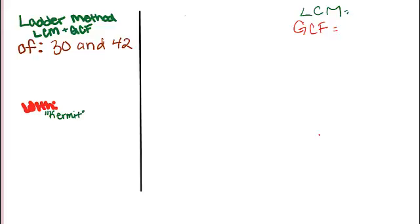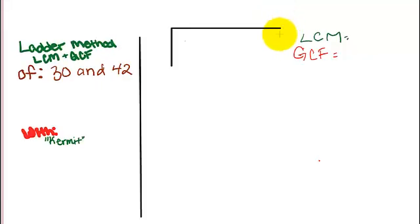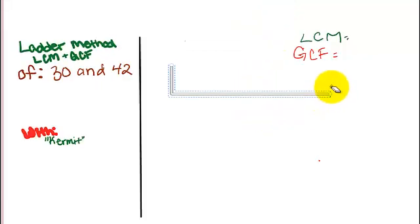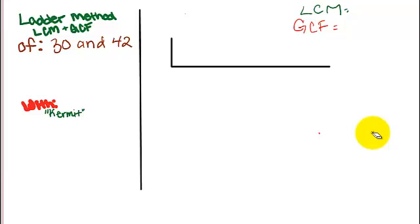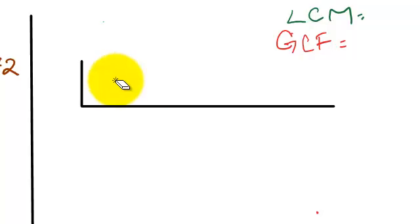So our first step is to, you know how a division sign looks like this? What we want to do is flip it upside down. And we're going to put the numbers we're working with in that. So we're going to have 30 and 42.